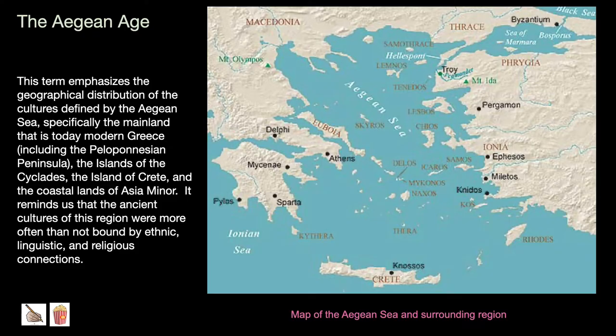The Aegean Age. This term emphasizes the geographical distribution of cultures defined by the Aegean Sea — specifically the mainland of modern Greece, including the Peloponnesian Peninsula, the islands of the Cyclades, the islands of Crete, and the coastal lands of Asia Minor. It reminds us that the ancient cultures of this region were more often than not bound by ethnic, linguistic, and religious connections.